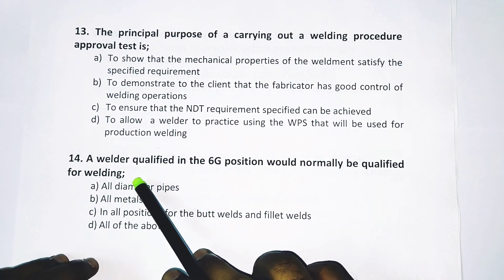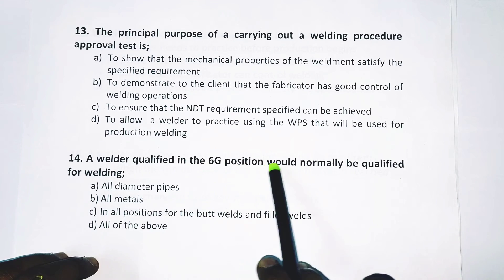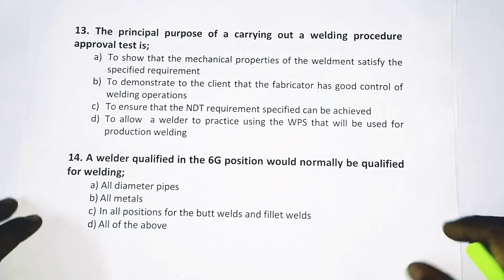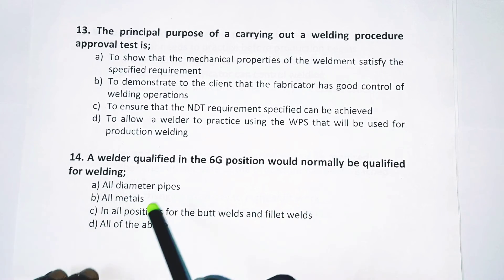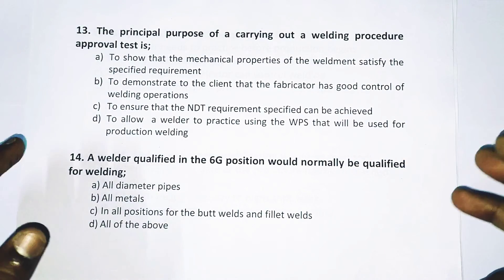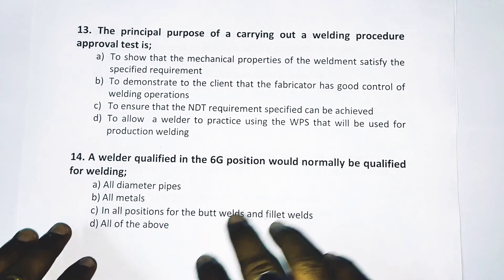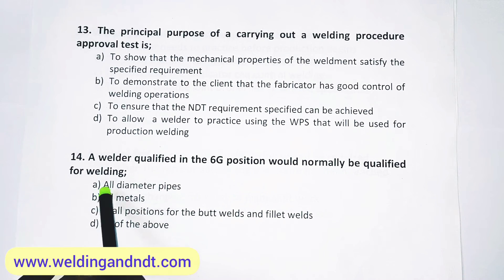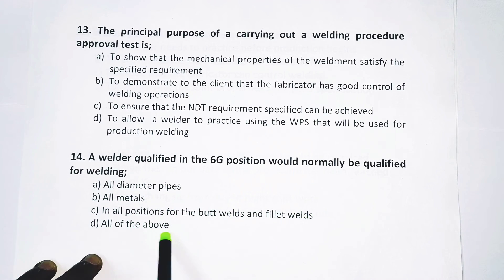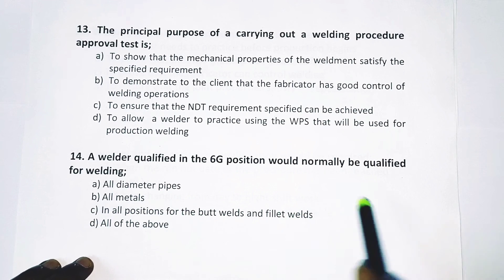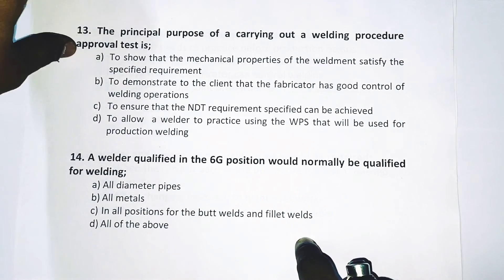Question number 14: A welder qualified in the 6G position would normally be qualified for welding in all positions for butt welds and fillet welds. This is a very common question. In most codes, a welder qualified in the 6G position is allowed to weld in all positions. So the answer is C — in all positions for butt welds and fillet welds.